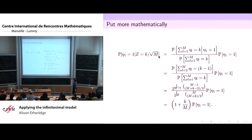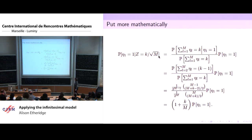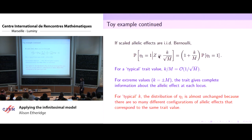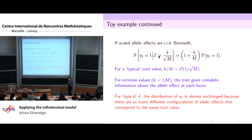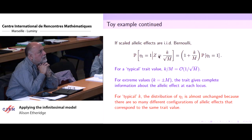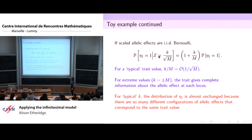So it's just been distorted by this factor k/m. For a typical trait value, k — the surplus of plusses over minuses in the Bernoulli variables — is going to be on the order of square root of m. So k/m is on the order of one over the square root of m, and for a typical trait value I'm not expecting to distort things very much. But if I take the most extreme value, k = ±1, I'm actually getting complete information about whether e_l^1 is one.